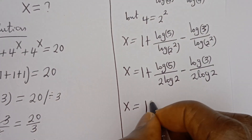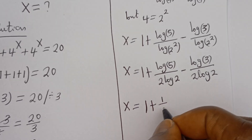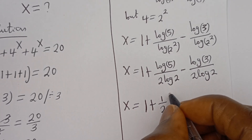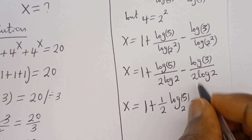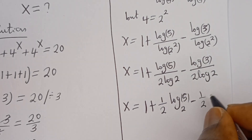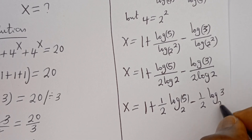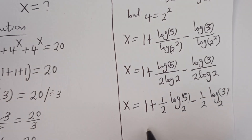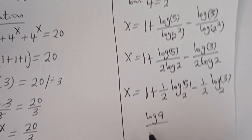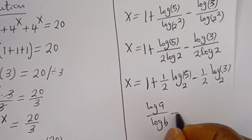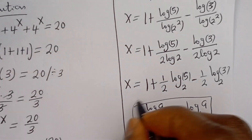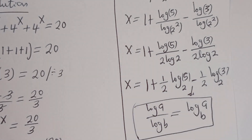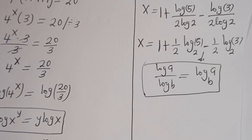So s is equal to 1 plus one-half log 5 base 2, minus one-half log 3 base 2. Because if you have log a divided by log b, this is equal to log a base b. Therefore our final answer is s equals 1 plus one-half log 5 base 2 minus one-half log 3 base 2.